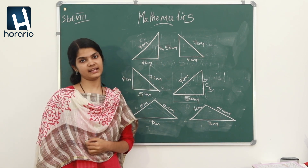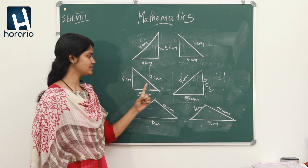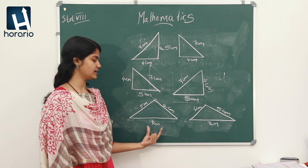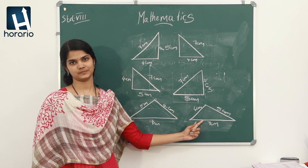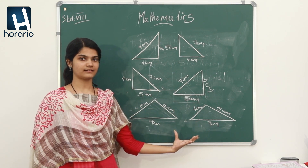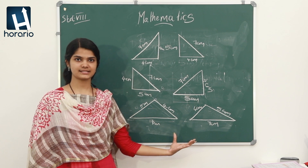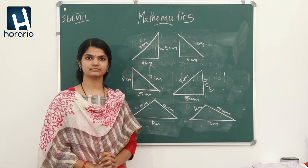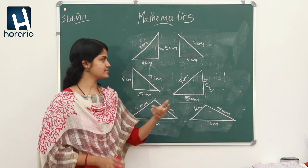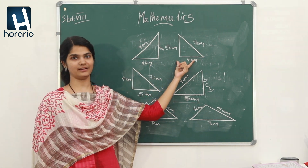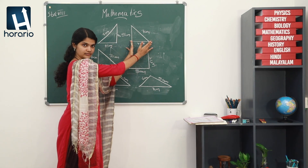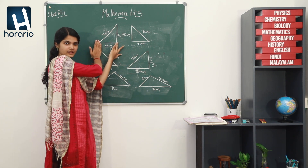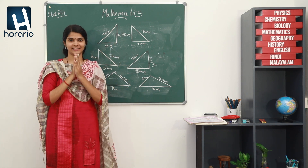What about when we take 5 centimetres as base? We will get two triangles like this. And when it comes to 7 centimetres, we get triangles like this. What is the peculiarity of these different triangles? Their sides are equal, right? Then what about their angles? Their angles are also equal. When we take one triangle, flip it, and place it above the other, we can see that these two triangles coincide each other.